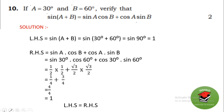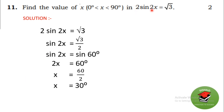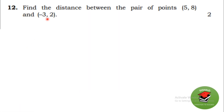Find the value of x given 0° < x < 90°, where 2sin2x = √3. Dividing both sides by 2: sin2x = √3/2 = sin60°. So 2x = 60°, therefore x = 30°.